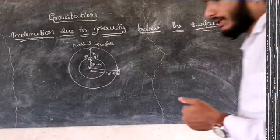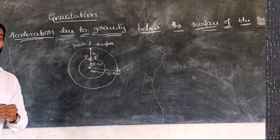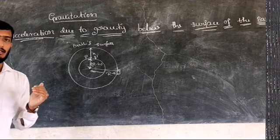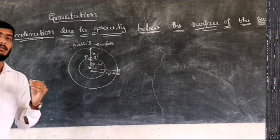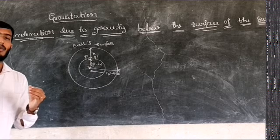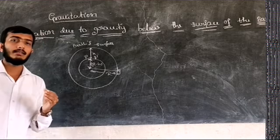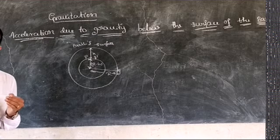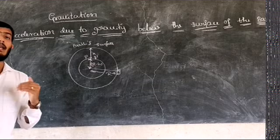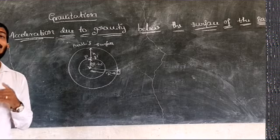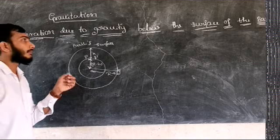Hello students. In the previous video we discussed acceleration due to gravity above the surface of the Earth. The final expression is g-dash = g into (1 + h/r)^(-2), which simplifies to g-dash = g·(1 - 2h/r) when h is much lesser than r. Now we are going to discuss another derivation — acceleration due to gravity below the surface of the Earth.